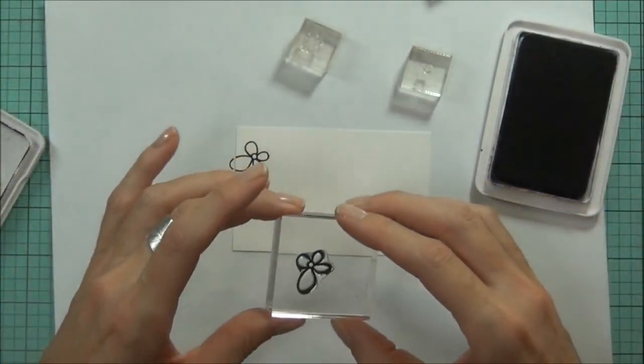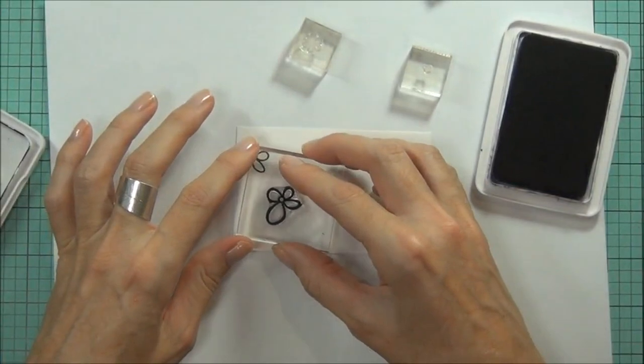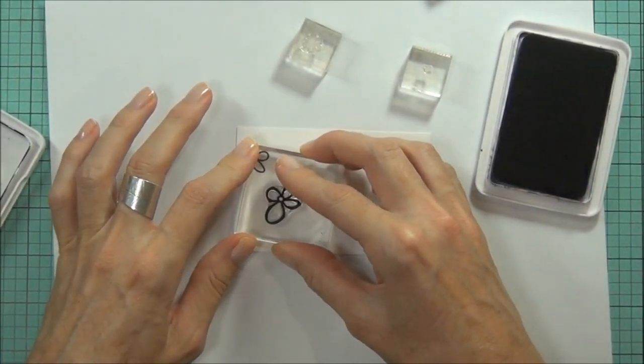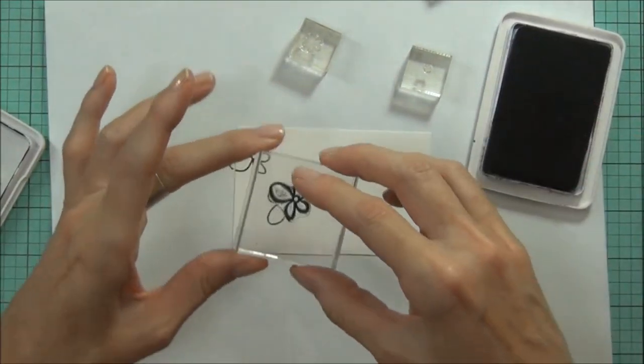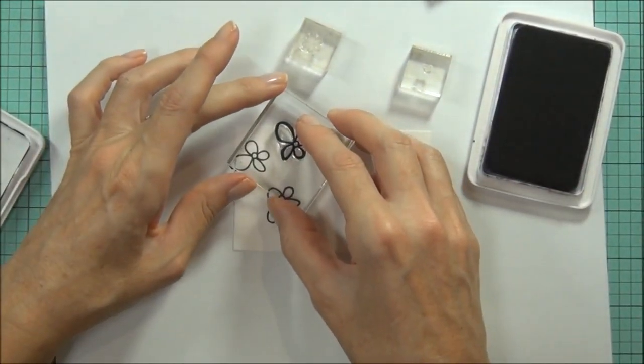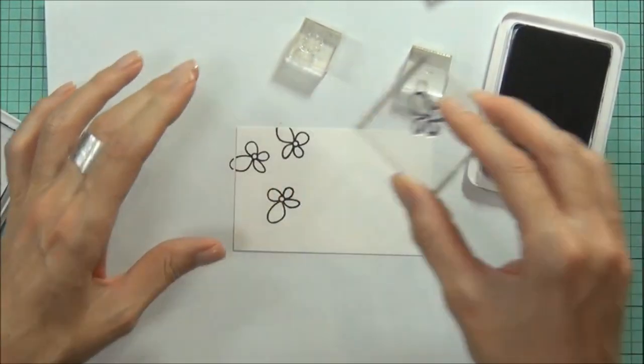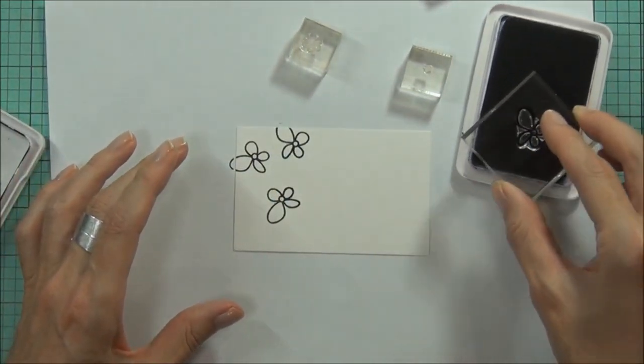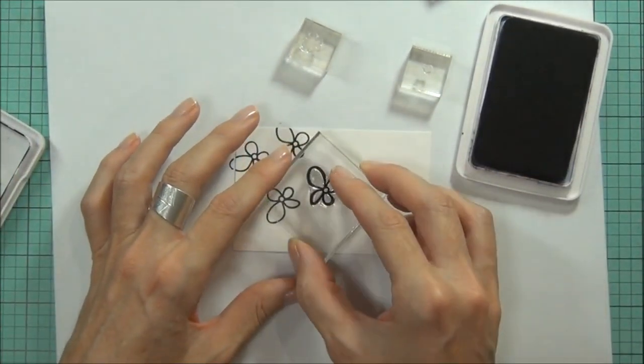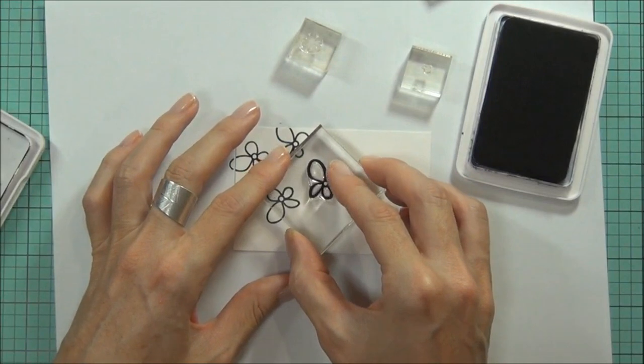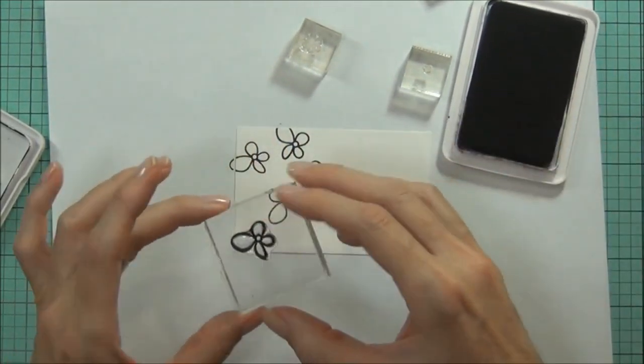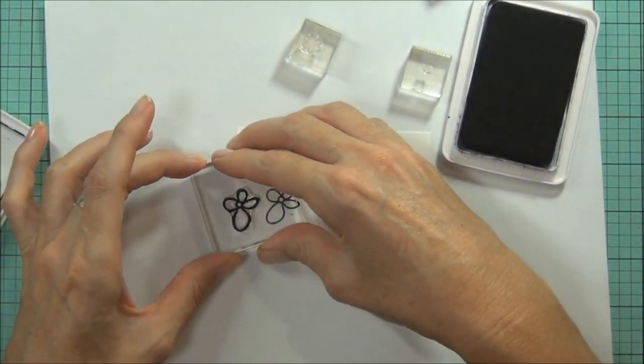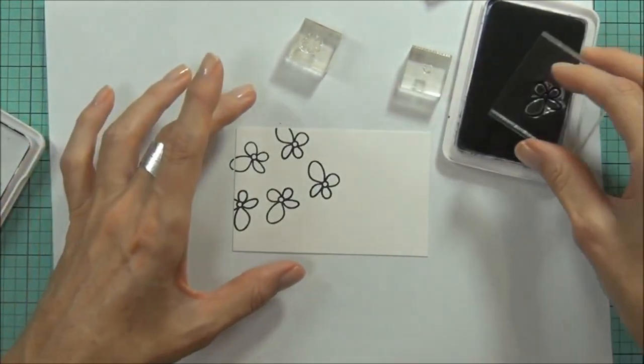I've cut myself some watercolor cardstock in a small panel that's going to sit on my card. One of the tricks that I like to do is actually stamp out the larger images first because then it's always easier to fill in the gaps with the smaller images. Make sure also that you stamp some of your images off the side of the panel—makes it look more realistic.